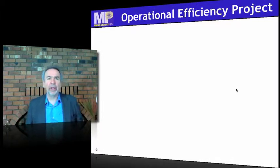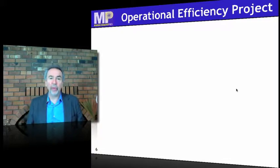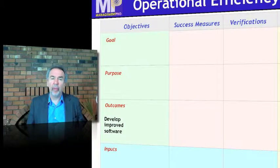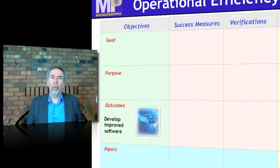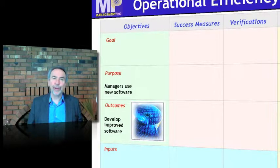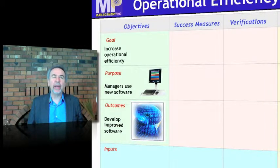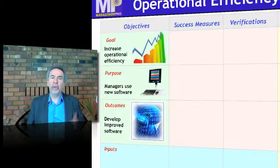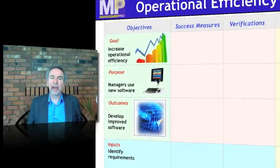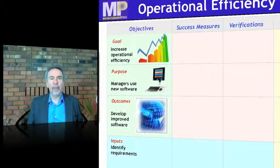Here's a client example. I had a client developing some improved software. I asked him, what are you trying to accomplish and why? He said he was trying to develop improved software — that's his outcome. The why is where you really become strategic. Why are you doing it? So managers will use the new software. And why do you want managers to use the new software? So we can increase operational efficiency. So with that hierarchy of objectives, we can define some of the tasks — identify requirements and so forth.